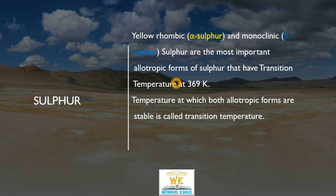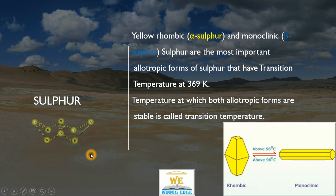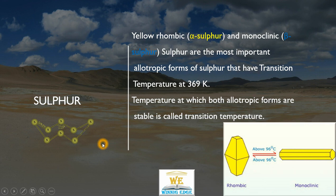The temperature at which both allotropic forms exist in equilibrium is known as the transition point. Sulphur exists as 8-atom crown-shaped rings, known as rhombic Sulphur. This 8-atom Sulphur is converted into monoclinic Sulphur at 369K. At room temperature, rhombic Sulphur (Alpha Sulphur), with its crown-shaped structure, is more stable. Monoclinic Sulphur is stable at high temperatures.